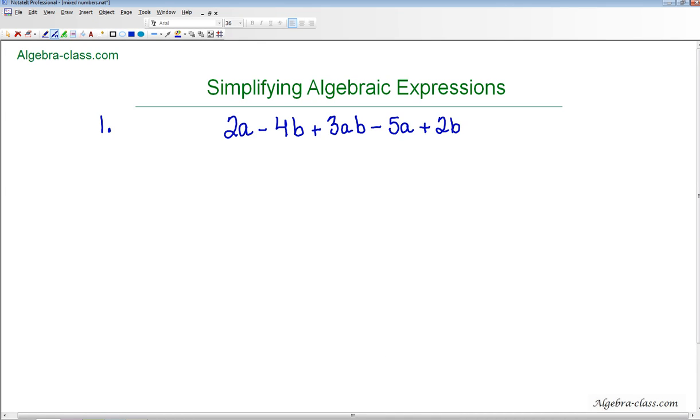If you're following me on AlgebraClass.com, this is problem number one for the Simplifying Algebraic Expressions practice problems. Here we have 2a minus 4b plus 3ab minus 5a plus 2b.